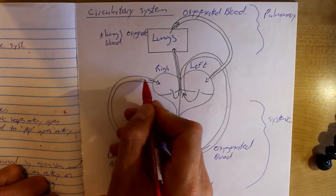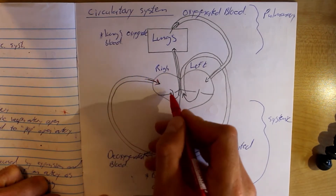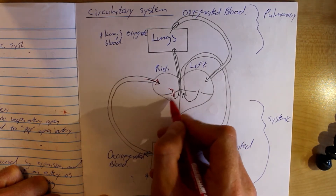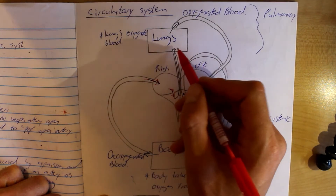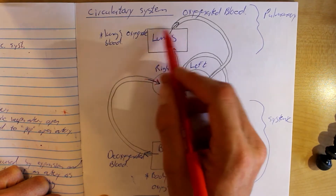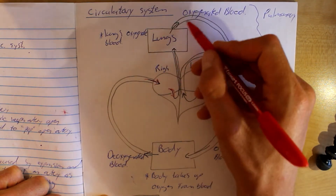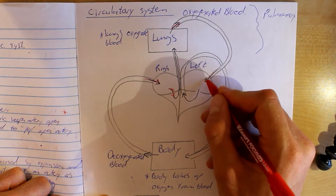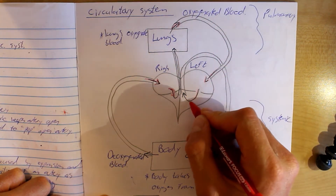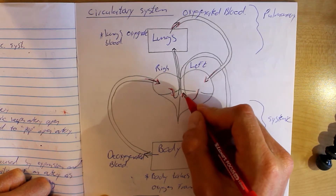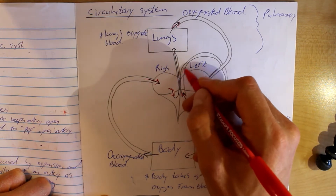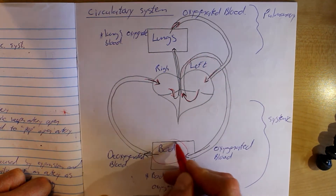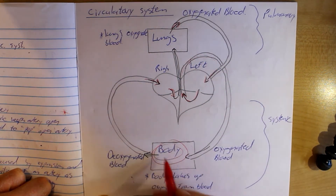Blood flows into the right atrium, then goes to the right ventricle. From the right ventricle, it's pumped to the lungs. Here blood is oxygenated and this oxygenated blood travels back to the heart to the left atrium. It's pushed into the left ventricle where the left ventricle contracts and pushes the blood to the rest of the body. At the body, the blood gives off the oxygen.